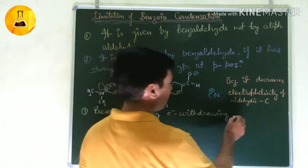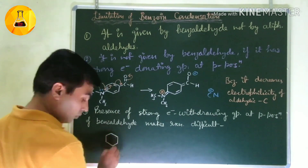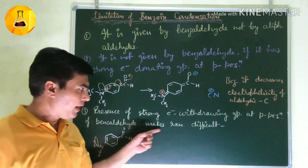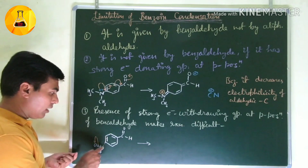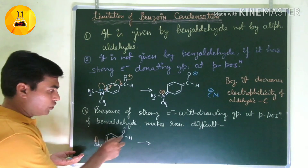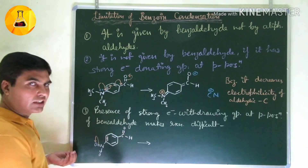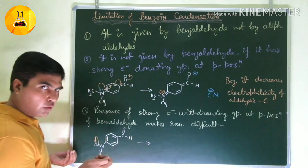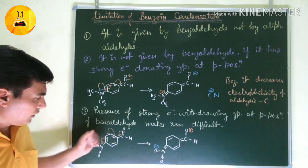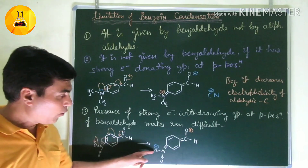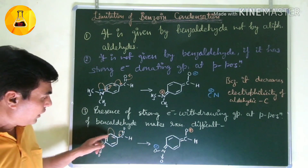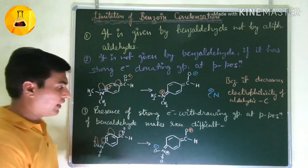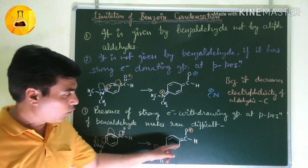Third limitation: the presence of a strong electron withdrawing group at the para position of benzaldehyde also makes the reaction difficult. With an electron withdrawing group, the conjugated structure draws electrons away. The electron density around the carbonyl carbon is further altered — the conjugation now pulls electrons toward the withdrawing group, generating a positive charge elsewhere and affecting the intermediate stability.